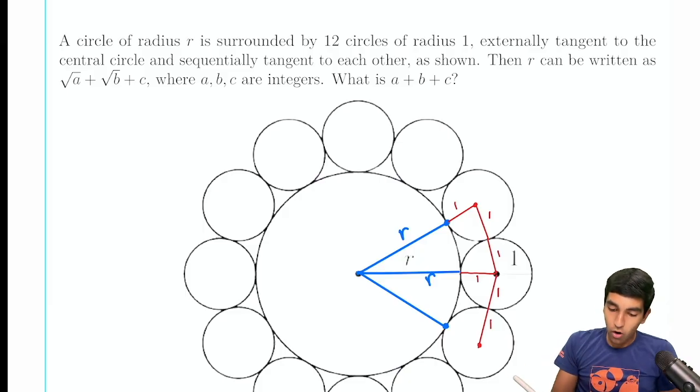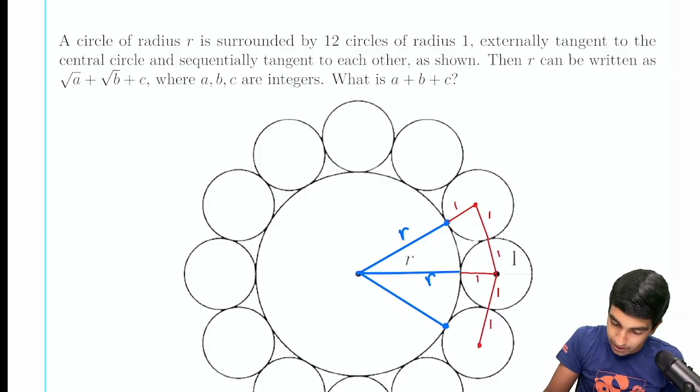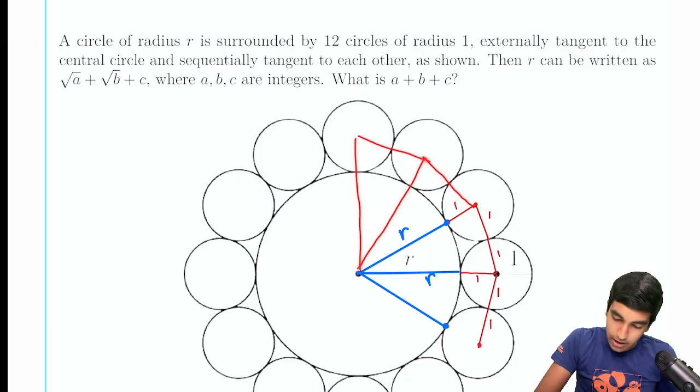So how are we supposed to find r? Okay, so the key thing here is we have 12 such circles. And I'm not going to draw it out, but because we have 12 circles, we can divide up our figure into 12 triangles.